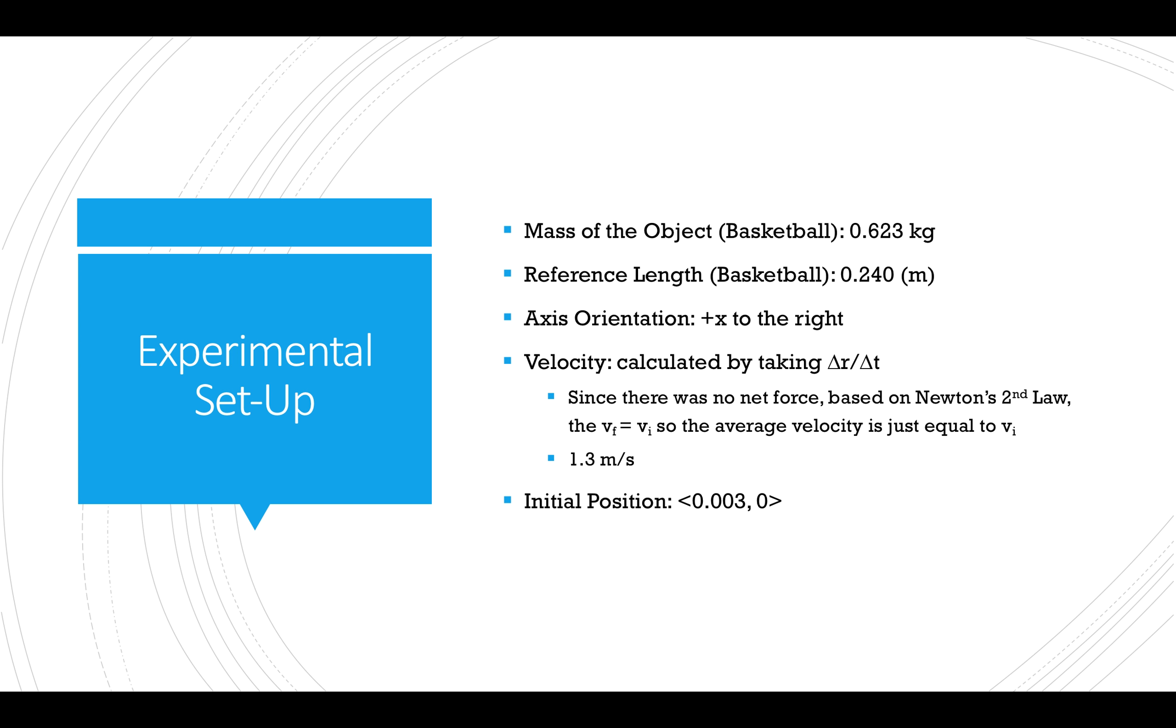The experimental setup was as follows. The mass of the basketball was found to be 0.623 kilograms and the length of the basketball was used as the reference length. The axis was oriented so the positive x direction faced to the right.